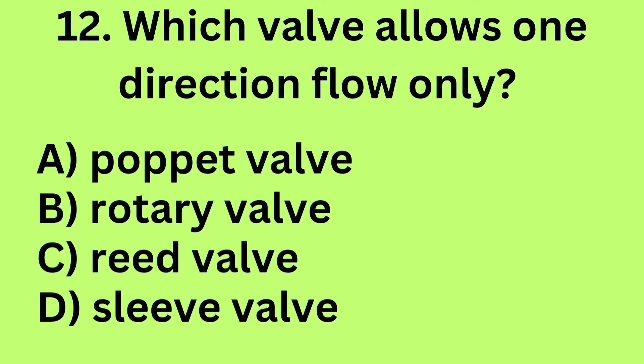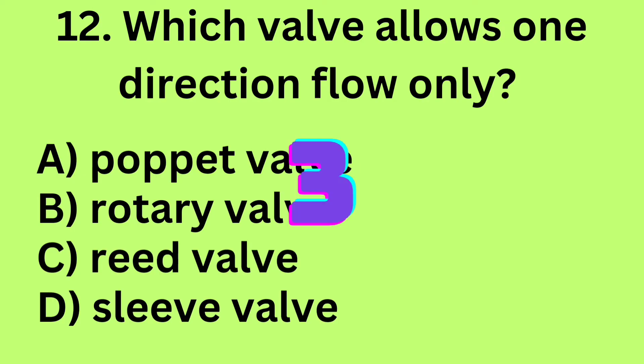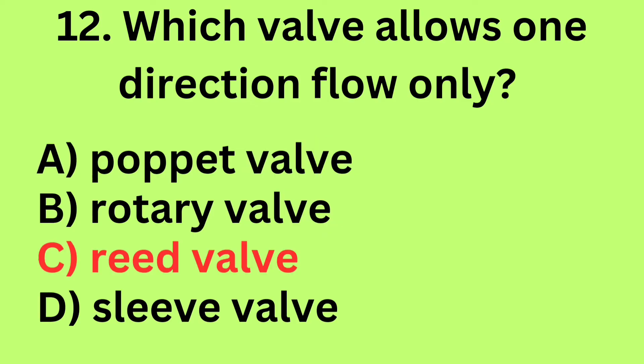Question 12: Which valve allows one direction flow only? A. Poppet valve, B. Rotary valve, C. Reed valve, D. Sleeve valve. Answer: C. Reed valve.